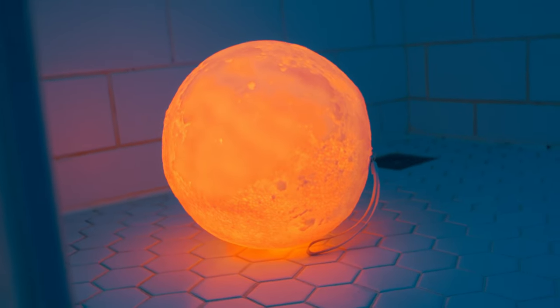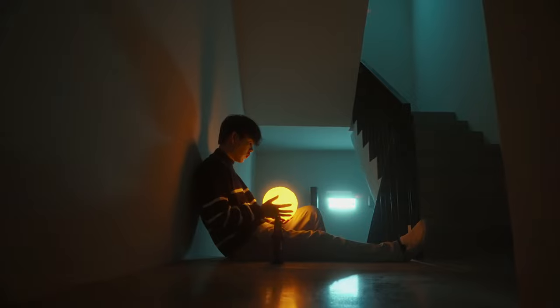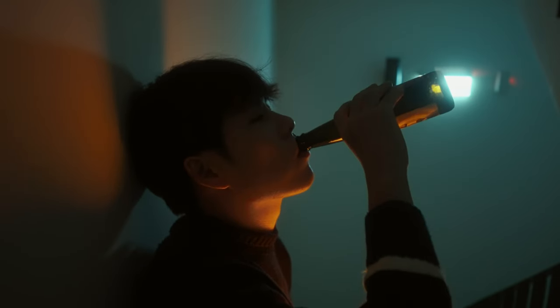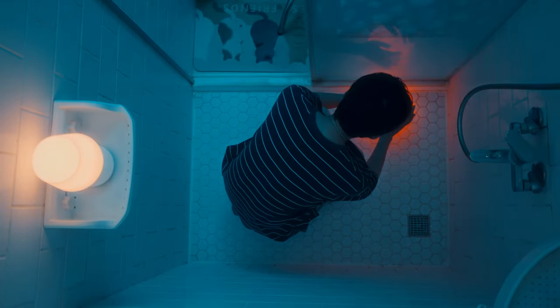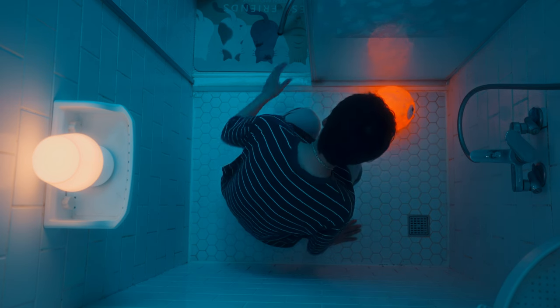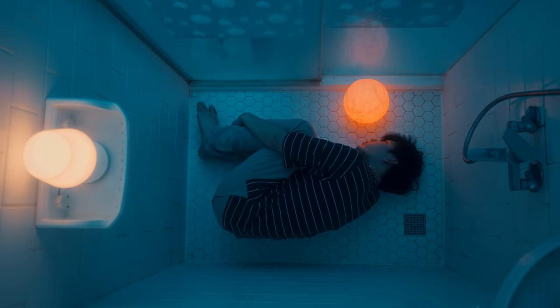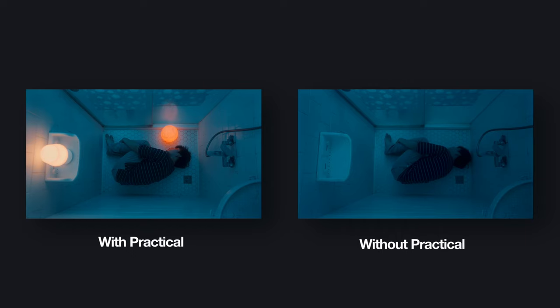Next, I placed two practical lights in the scene to create depth. Normally when shooting from a standard angle, you'd put practical lights in the background to create depth and layers. But since we're shooting from the top and there's no background space, I placed a small lamp on a plastic shelf on the wall and a light bulb on the floor in front of my subject's face. These two practical lights create two layers and more depth, and they also help create a teal and orange color contrast against the blue background.